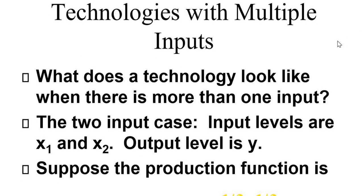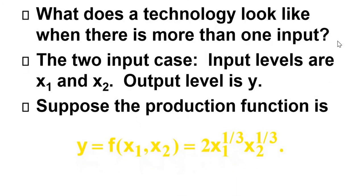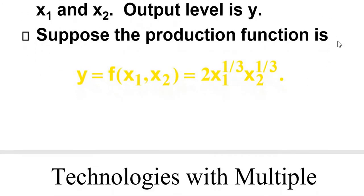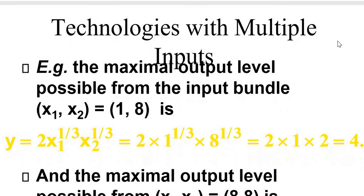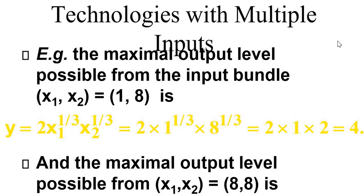Technologies with multiple inputs. Technologies can be used with multiple inputs: there is output level y and two inputs x1 and x2. When multiple input levels are involved, the maximum output possible is from input bundle (x1, x2). For example, x1 equals 1 and x2 equals 8.